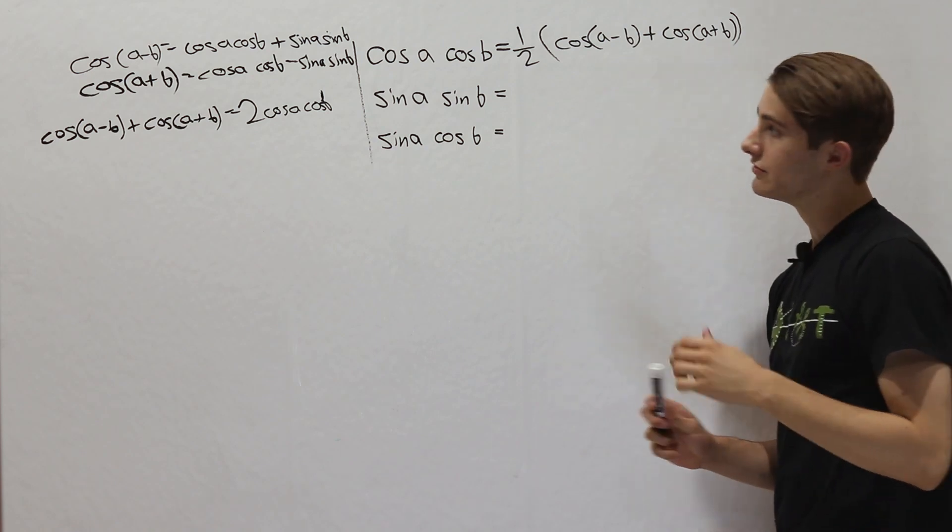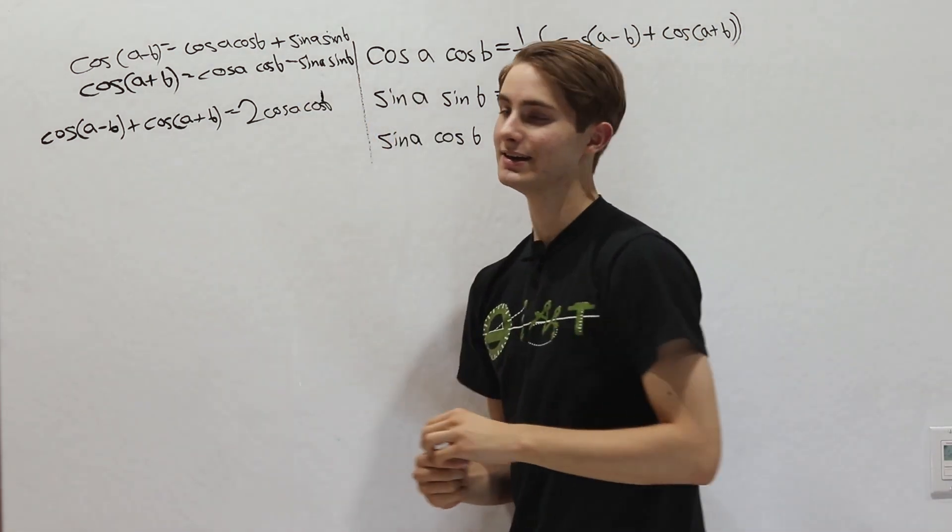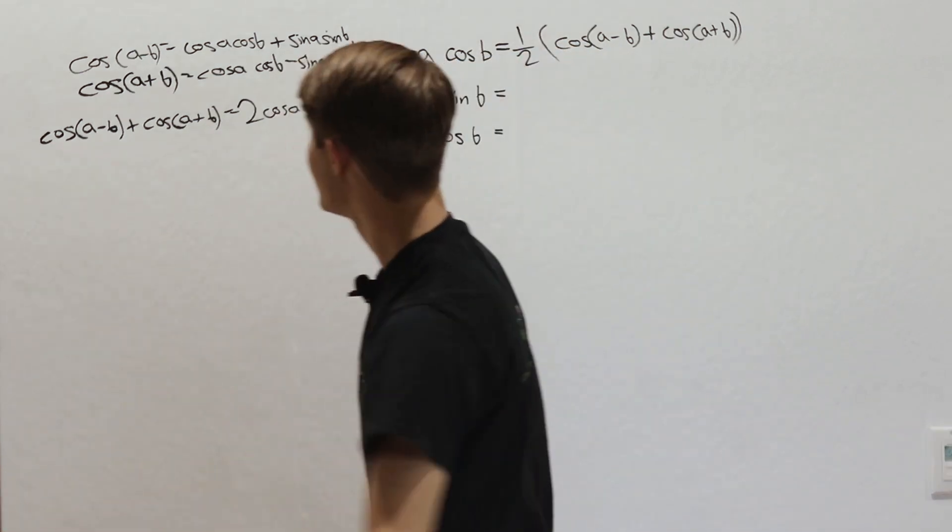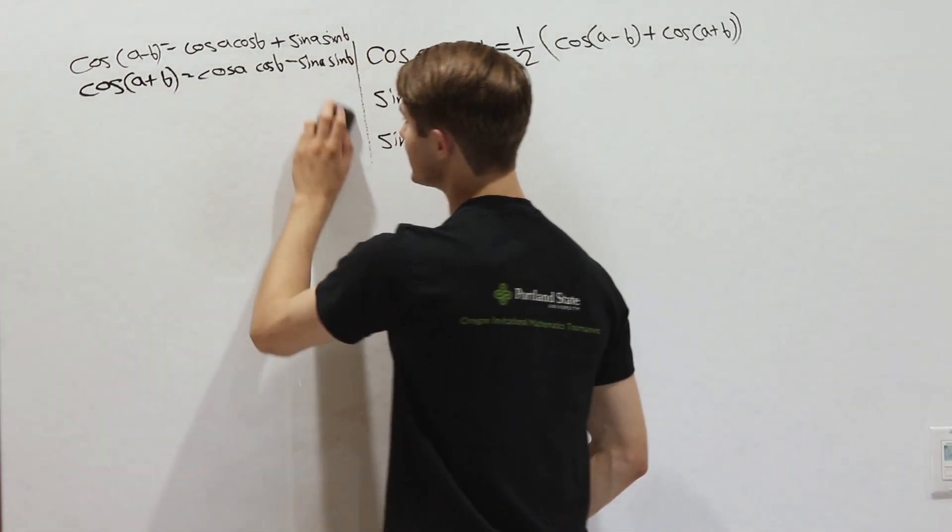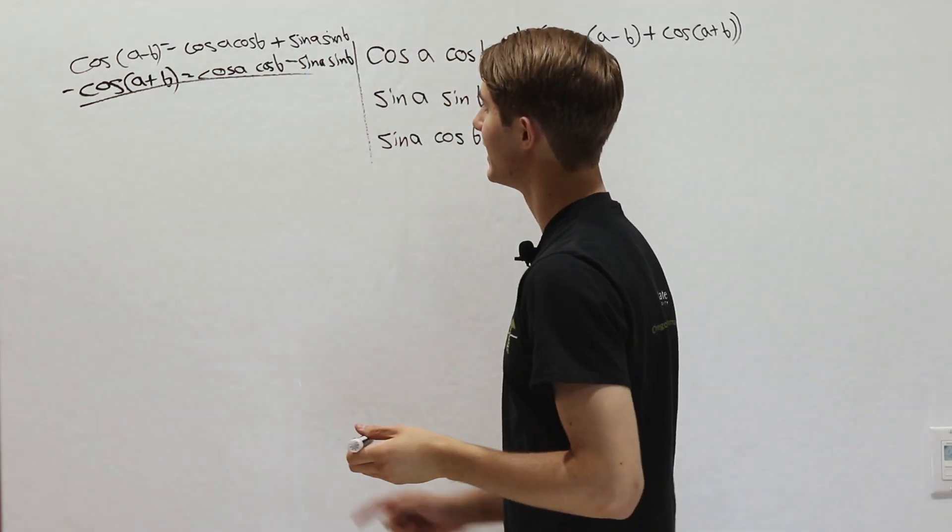Now let's say instead of finding cosine a cosine b, we want to find sine a sine b. Well in that case we would have to do something a little different. Instead of adding the two equations, we're going to subtract them, just like that.